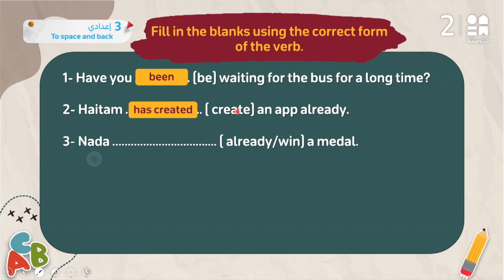Number three: 'Nada ___ already ___ a medal.' The keyword 'already' tells us to use the present perfect. We use has/have + past participle. 'Already' comes in the middle of the sentence. The past participle of 'win' is 'won', so the answer is: 'Nada has already won.'